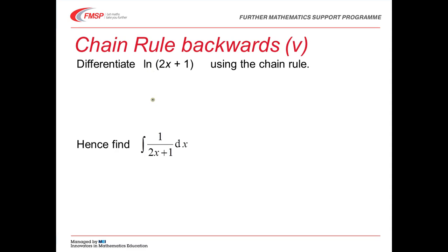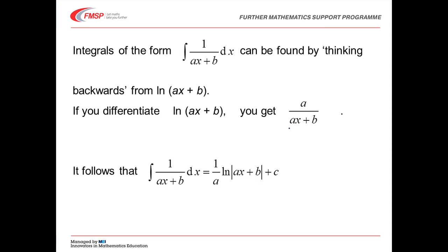And another one. If we differentiate log of 2x plus 1 using the chain rule, we'll get 1 over 2x plus 1. Differentiate log of thing, we get 1 over thing. And then differentiate the 2x plus 1, multiply it by 2. So if we want the integral of 1 over 2x plus 1, that's going to be, well, broadly speaking, we'd get log of 2x plus 1. If I differentiated that, I'd get 2 of them, so I need a half. Integrals of this form can be found by thinking backwards from log of the denominator. If you differentiate log of ax plus b, we get a over ax plus b, and therefore the integral of 1 over ax plus b must be 1 over a log of ax plus b.